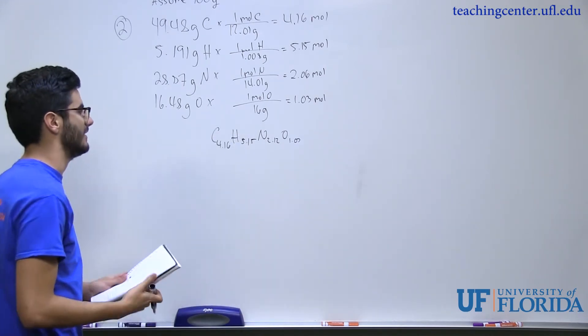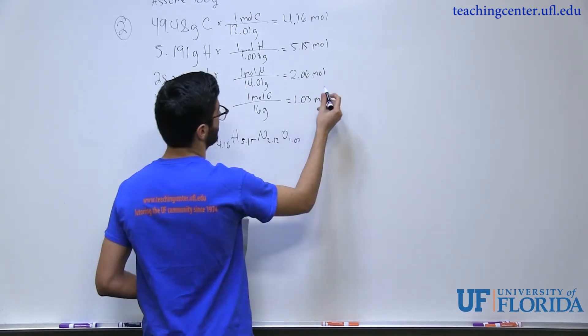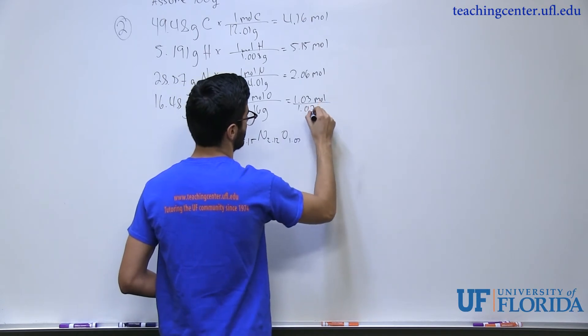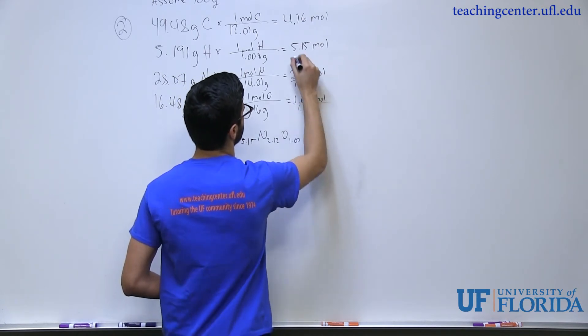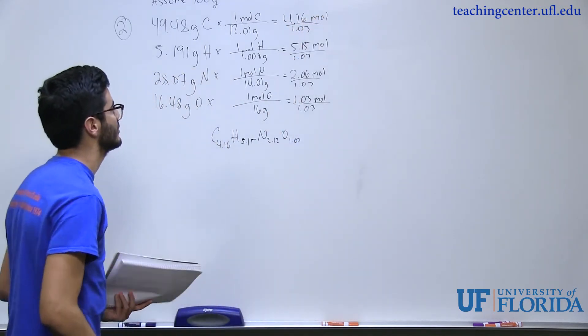But this just looks weird. We've never seen it like this, right? Because what you want to do is you want to divide by the smallest amount of moles. So I see my smallest amount of moles here is going to be my oxygen. So if I divide everybody by 1.03, you should get much more manageable numbers.